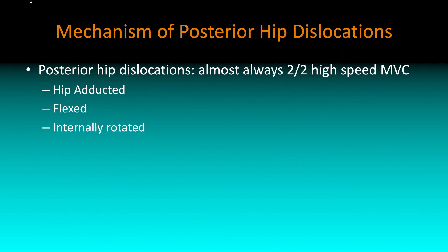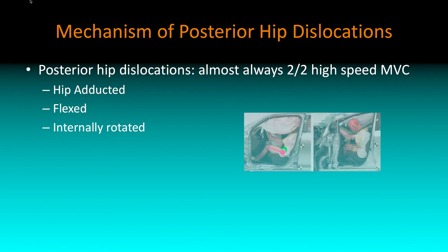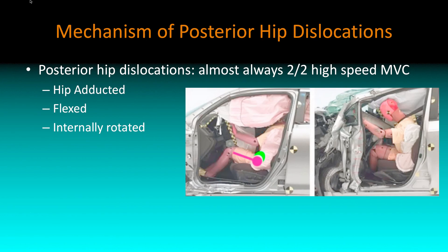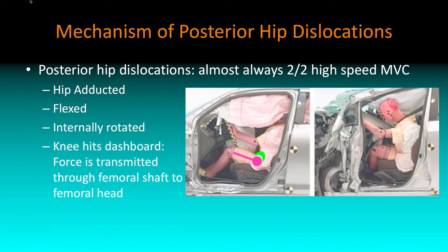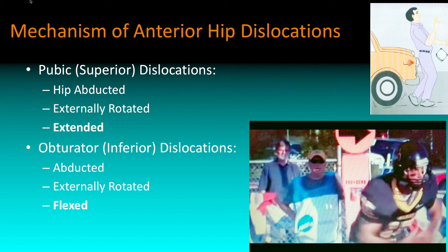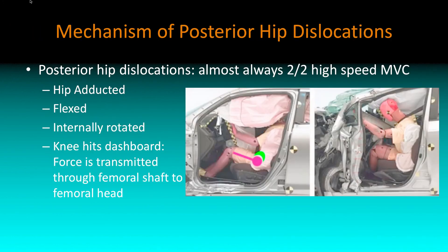Posterior hip dislocations are almost always secondary to high-speed MVCs. You're sitting in a car, your hip is adducted, flexed and internally rotated — both legs close to one another. Your knee hits the dashboard, the force goes through the femoral shaft into the femoral head and just pushes past the socket.